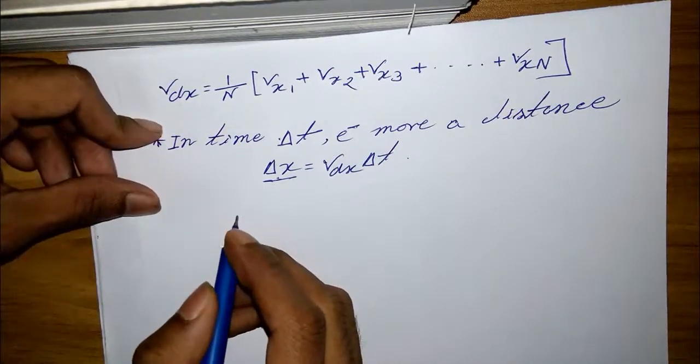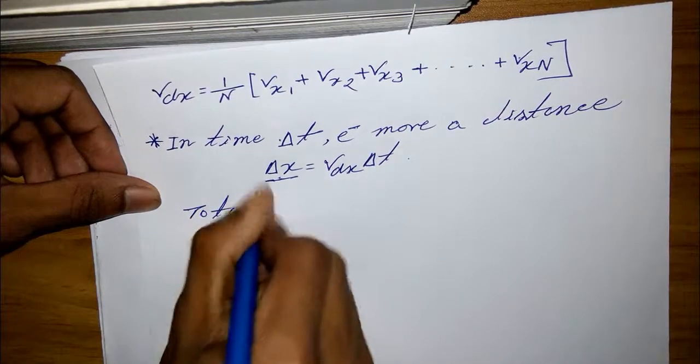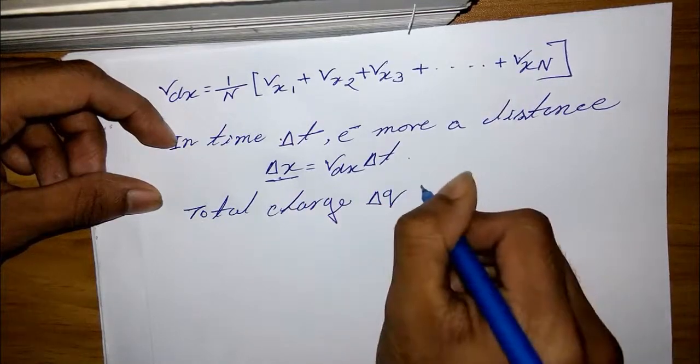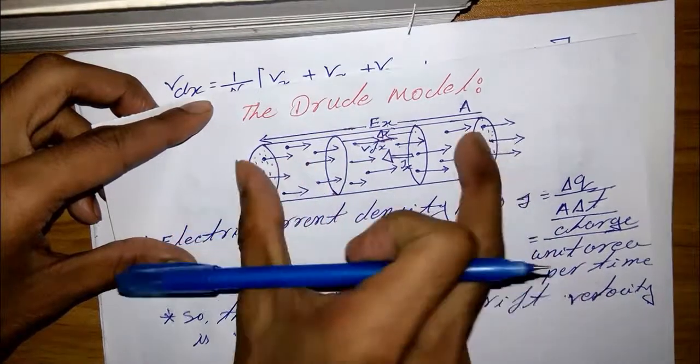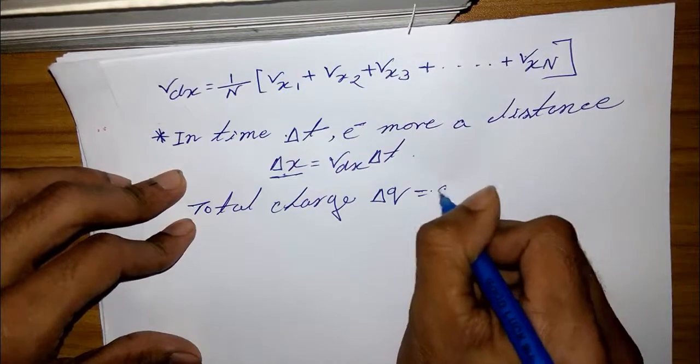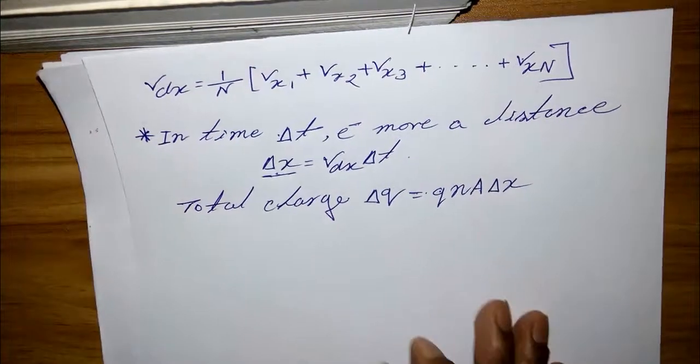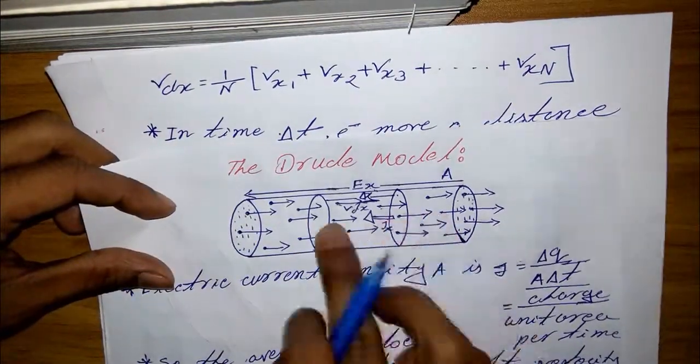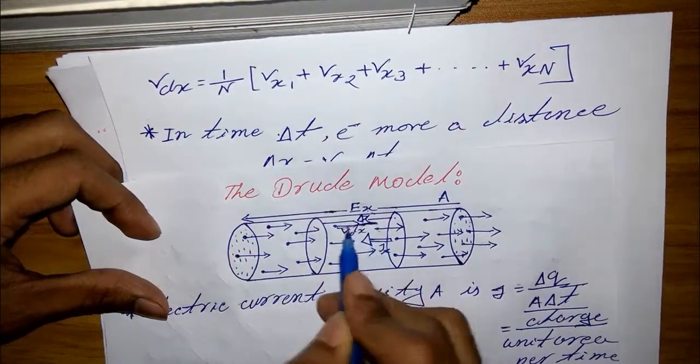And the total charge del q crossing area A, the total charge del q crossing the area A. That's why we can write del q equal q n a del x. So we can write the total charge as n number of electrons, then the area, and multiply with this direction x.